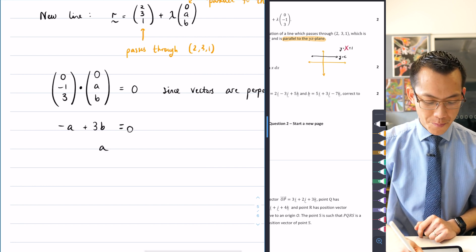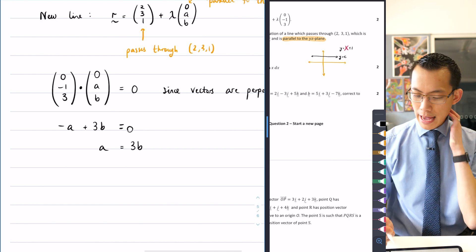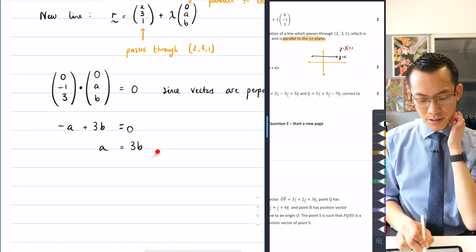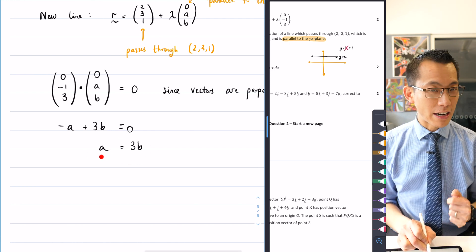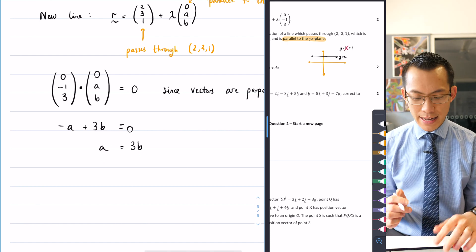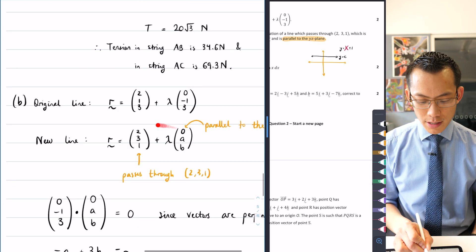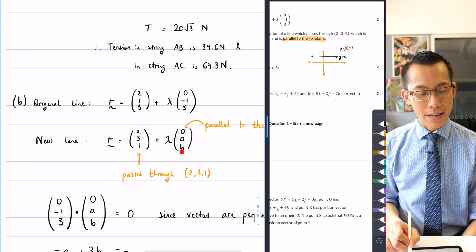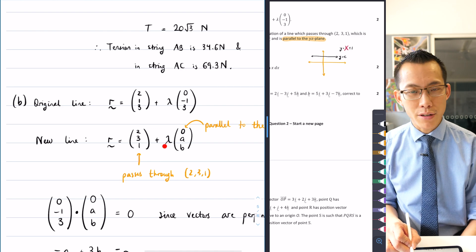So therefore, A equals 3B. And you might say, well, hold on, Mr. We've got infinitely many solutions to this. Because A can take on any value, and once it takes on any value, a different value pops out for B, right? Why is that so? And the answer is, if you look at this, well, the direction vector can be any multiple of these, so long as your lambda is appropriate.